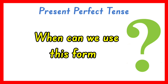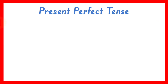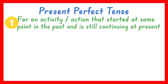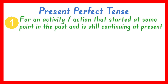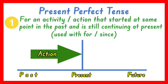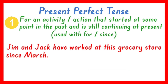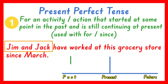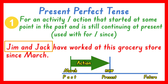Now let us know when we can use the present perfect tense of verbs. First, we use the present perfect tense for an activity or action that started at some point in the past and is still continuing at present. We usually use for or since with this structure. For example: Jim and Jack have worked at this grocery store since March. This sentence means that Jim and Jack started working at this store last March and they are still working there up to now. That is why the present perfect tense have worked is used, and have is used because the subject is plural — Jim and Jack.